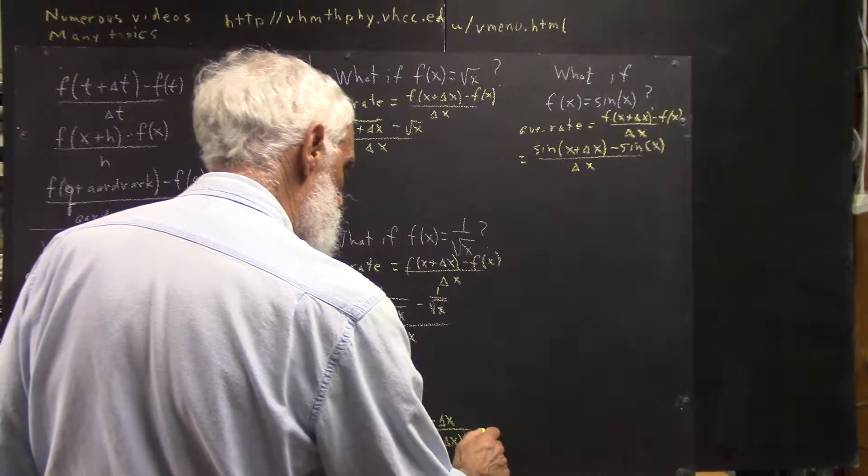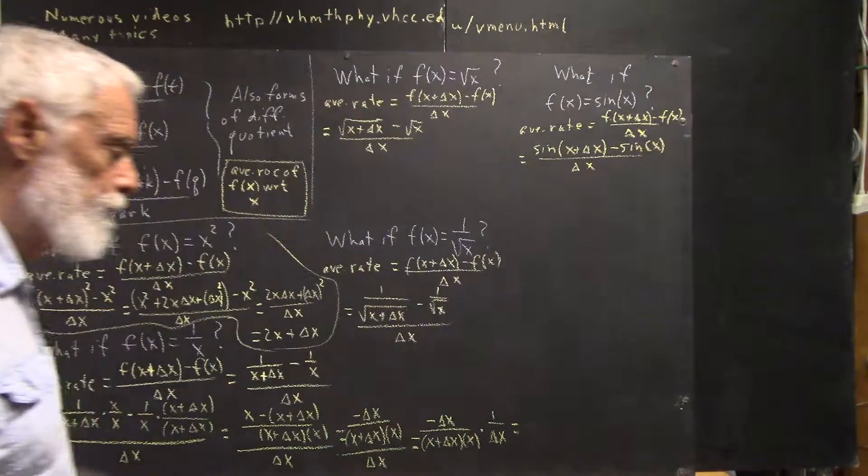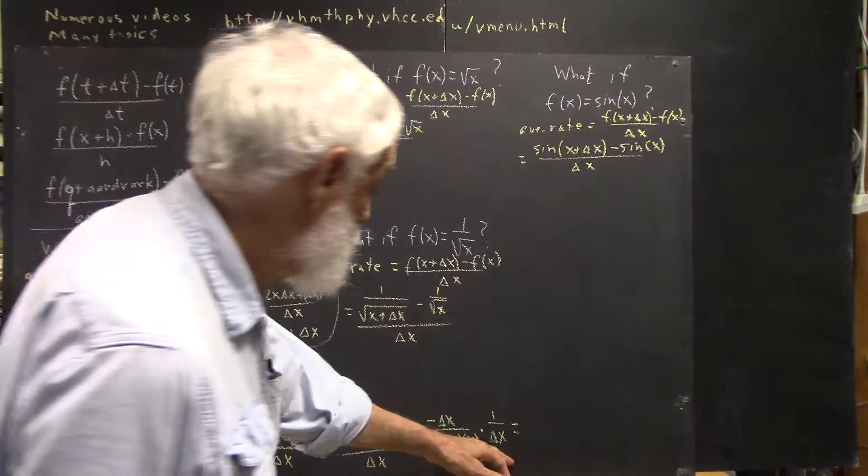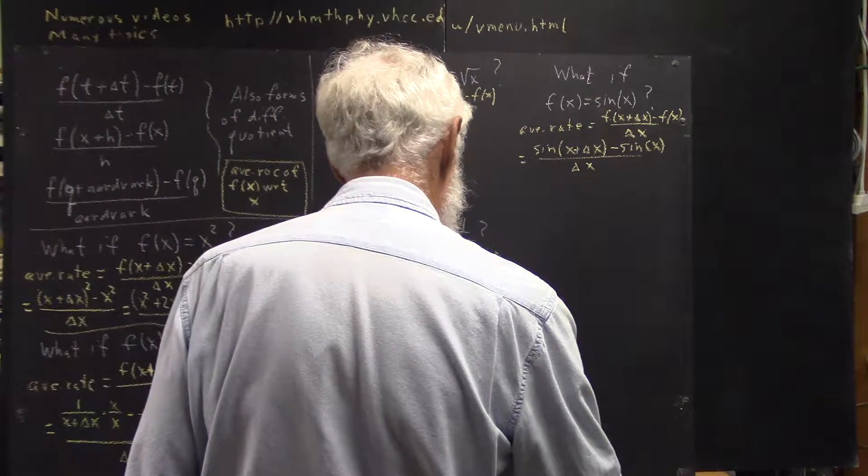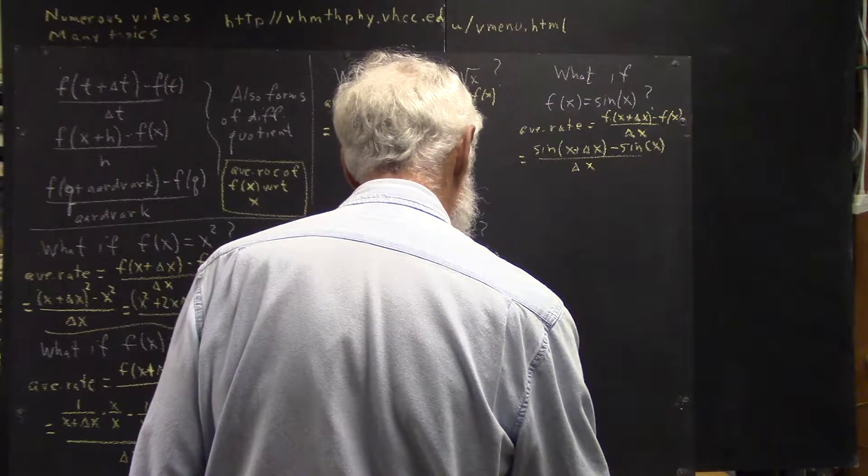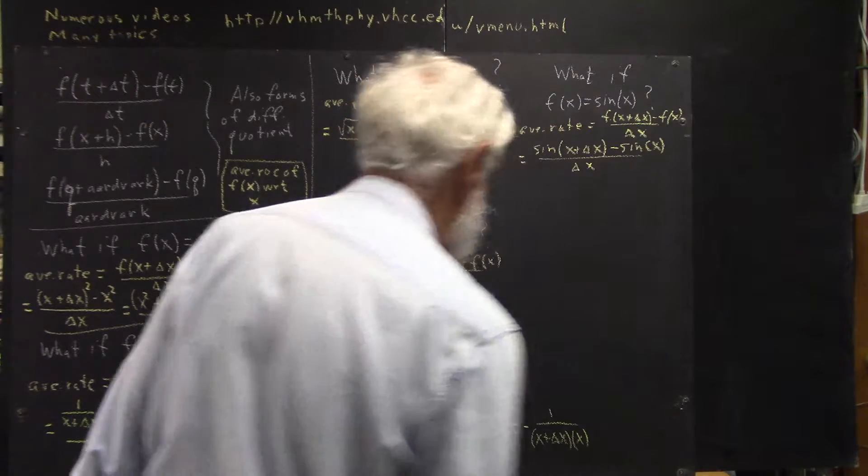Well, divided by delta x means multiplied by the reciprocal of delta x. And now I see that the delta x divides out and I get negative 1 over x plus delta x times x.